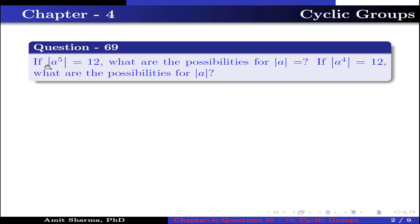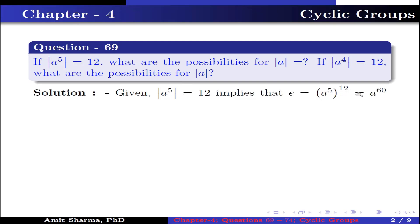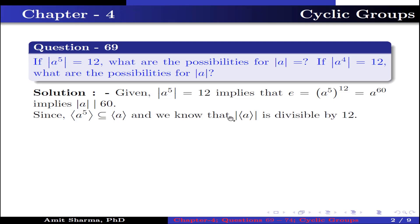Question number 69: if order of a to the power 5 is 12, what are the possibilities for order of a? Given order of a^5 is 12, this implies a^(5×12) = a^60 is equal to identity, which implies order of a divides 60. Since the group generated by a^5 is contained in the group generated by a, and order of the group generated by a is divisible by 12, therefore order of a is equal to 12 or 60.